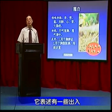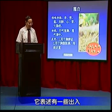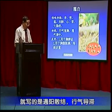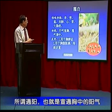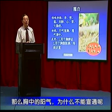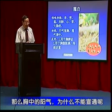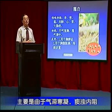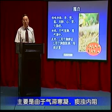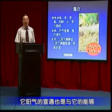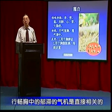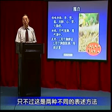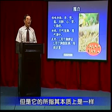在不同的中药著作里，表述有一些出入。有的书上写的是通阳散结、行气导滞。所谓通阳，也就是宣通胸中的阳气。胸中的阳气为什么不能宣通呢？主要是由于气滞寒凝、痰浊内阻。阳气的宣通，也与能够形成胸中的气机直接相关。这只是两种不同的表述方法，本质上是一样的。